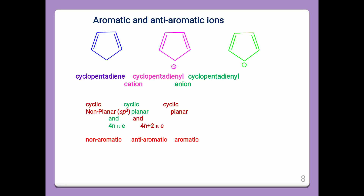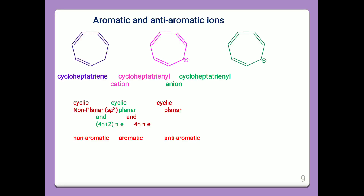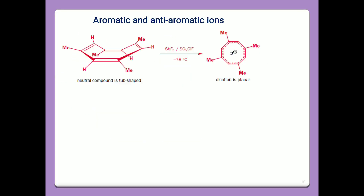Aromatic and anti-aromatic ions. For example: cyclopentadiene, cyclopentadienyl cation, and cyclopentadienyl anion. The first is non-aromatic, the second is anti-aromatic, and the third is aromatic. The neutral compound is non-aromatic and tub-shaped. In the presence of antimony pentachloride, it converts to a dication that is a planar, cyclic 6-electron species — so the compound becomes aromatic in character.